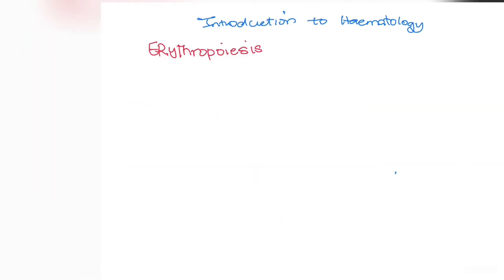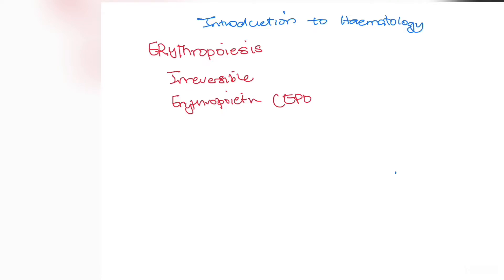Now we move on to erythropoiesis, which is an irreversible process. It is under the influence of a hormone called erythropoietin, or EPO for short. This hormone influences committed stem cells present in the bone marrow to differentiate, divide, and mature into specific cells — whether red blood cells, white blood cells, or platelets.